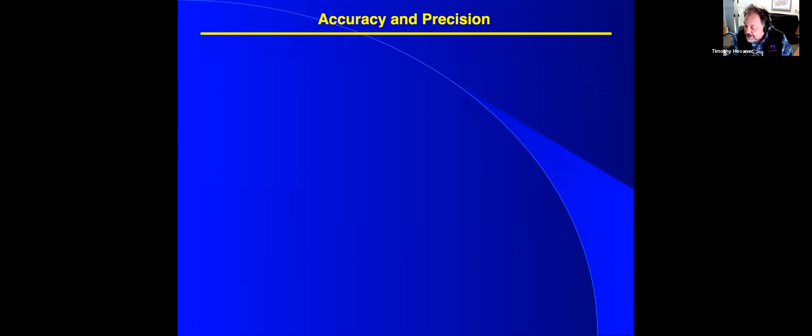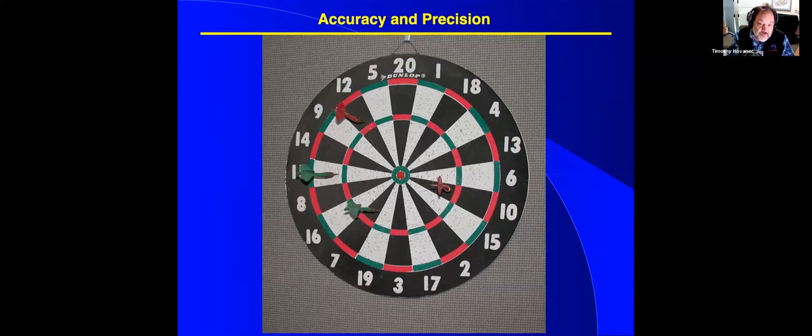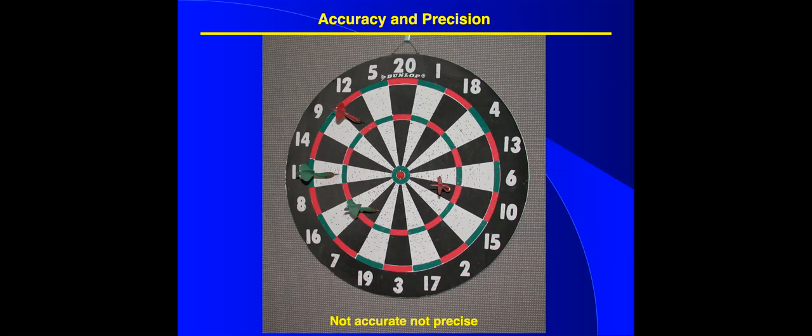And like anything else, though, we need to know how they work. They're going to give you a result. Even not changing color is a result. But is your test kit accurate? And is it precise? Those are two different things. It's instructive to use a dartboard. So you threw four darts at this dartboard, and you're terrible. You're not accurate. You're trying to hit the bullseye, and you're not precise. The darts aren't all clustered together. You're just random.